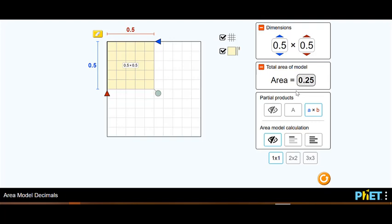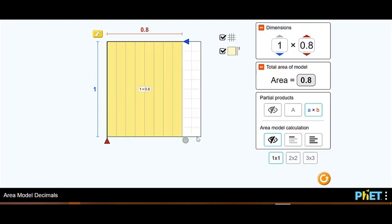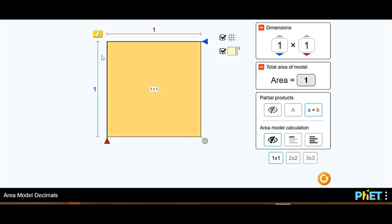But the interesting thing I want you to look at is, since this is a half, that would mean this whole length would be one. So if I had this whole length covered and this whole length covered, I would have one by one, so I would have one square unit. So my entire thing would be one.